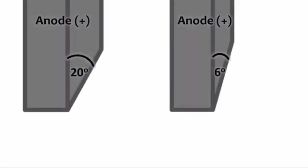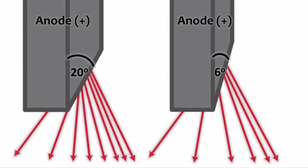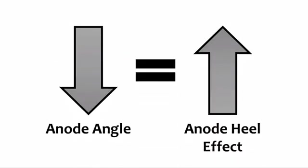A few variables can actually change the extent of the anode heel effect — in other words, the change in beam intensity across the beam isn't always the same. Decreasing the anode angle, making it steeper or smaller, increases the anode heel effect, because more x-rays get absorbed in the anode and the beam intensity on the anode side decreases. You can actually see that happening: when we decrease the anode angle from 20 degrees to 6 degrees, an increased number of x-ray photons get absorbed in the anode, so we have an increased difference in intensity between the anode side and the cathode side. The relationship between anode angle and the heel effect is inverse — as the anode angle decreases, the anode heel effect increases, meaning there is an increased difference in intensity across the x-ray beam.